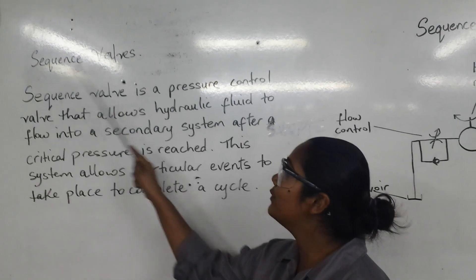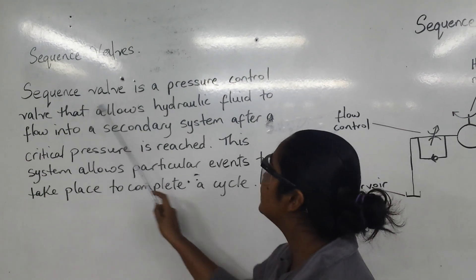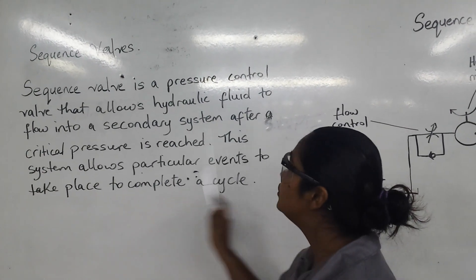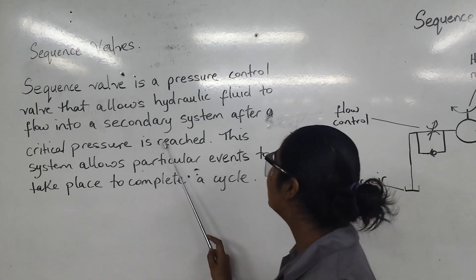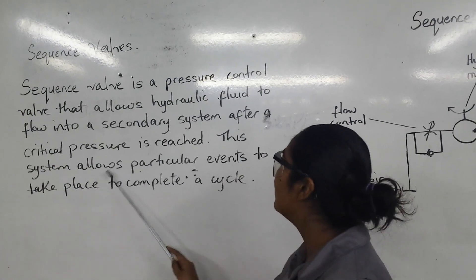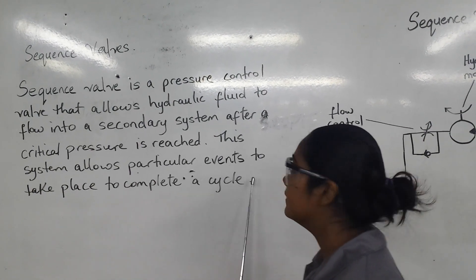Today we are going to talk about sequence valves. A sequence valve is a pressure control valve that allows hydraulic fluid to flow into a secondary system after a critical pressure is reached. This system allows particular events to take place to complete a cycle.